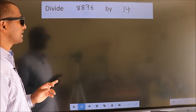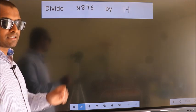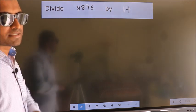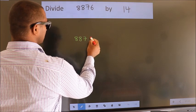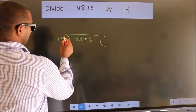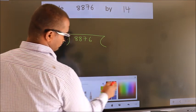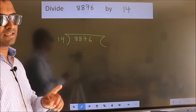Divide 8876 by 14. To do this division, we should frame it in this way. 8876 here, 14 here. This is your step 1. Next.